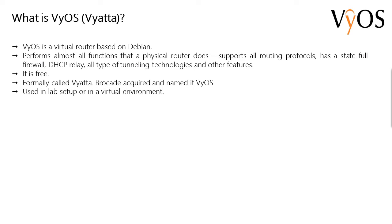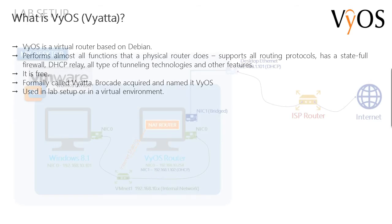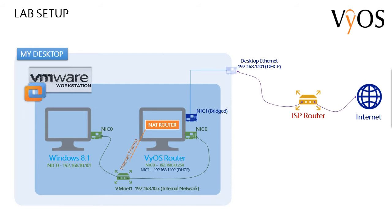This is basically used in a lab setup or in a virtual environment. In my case I use this as a NAT router to provide internet connectivity to my virtual machines running in VMware Workstation. In my lab setup, on my desktop I have installed VMware Workstation, and in it I have a Windows 8.1 virtual machine which has a single virtual NIC, NIC 0, connected to VMNET 1.